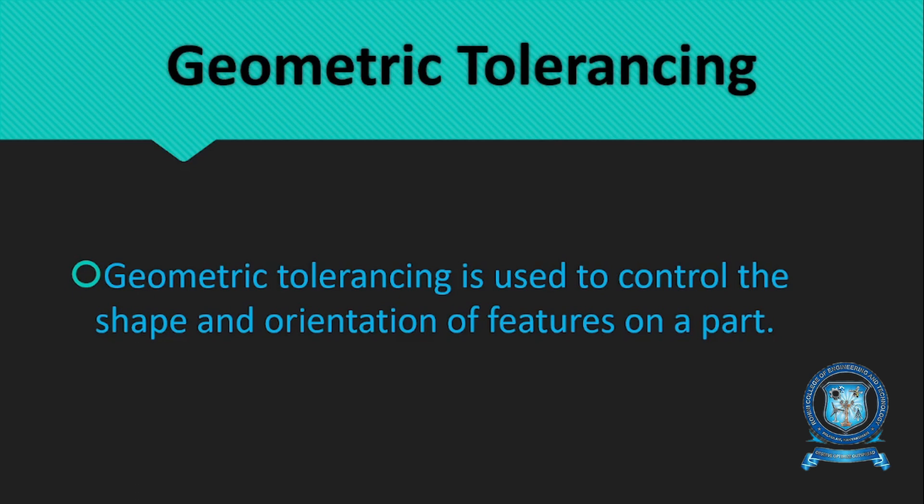Geometric Tolerance is used to control the shape and orientation of features of the part. Regarding Geometric Tolerance Symbols, the part has a defined shape and orientation. If the Geometric Tolerance Symbols change their measurements and tolerances, this shape and orientation of the features must also change.